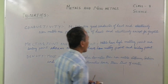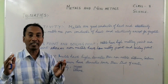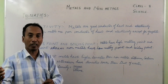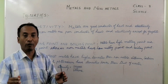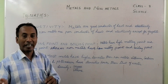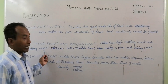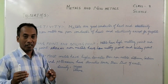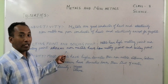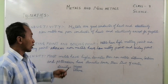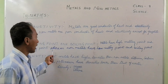When we say melting point, it means the conversion of a solid into liquid at a certain temperature — that is called melting point. And boiling point is a certain temperature at which a liquid is converted into gas. So metals have high melting point and high boiling point.